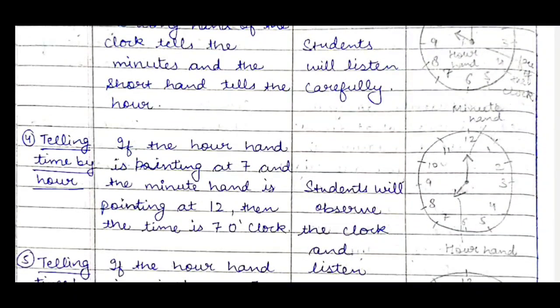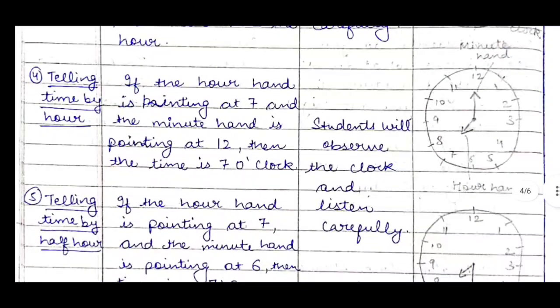For telling time by the hour: if the hour hand is pointing at 7 and the minute hand is pointing at 12, then the time is 7 o'clock. We can give various examples — for example, if the hour hand is pointing at 3 and the minute hand is pointing at 12, the time is 3 o'clock. We can ask students in between as well.